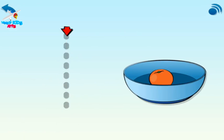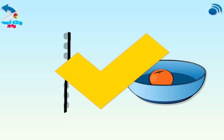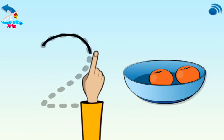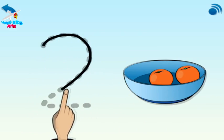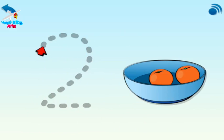Try again. Now trace it again. Two oranges in the bowl. Two. Your turn. Trace two.